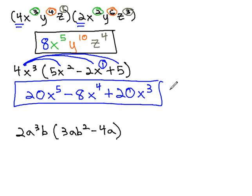This idea can be extended in this next example to include problems with several variables. Here, we have 2a cubed times b, times the polynomial 3ab squared, minus 4a. Again, we will distribute through the parentheses.